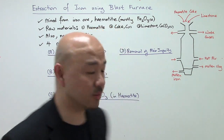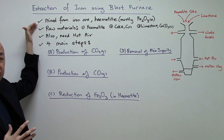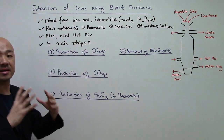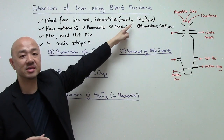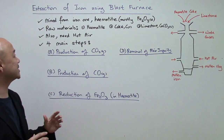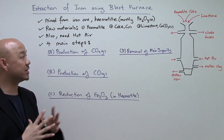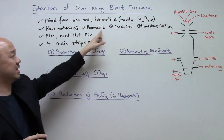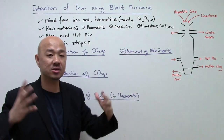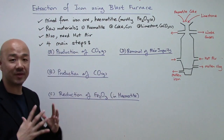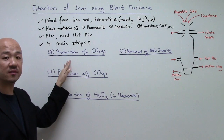Iron is always mined from the iron ore known as hematite, and the main component inside is iron(III) oxide, Fe₂O₃, in solid state. The raw materials used for the blast furnace to extract iron from hematite are: hematite itself, coke (which is essentially carbon), limestone (which is calcium carbonate, CaCO₃), and hot air, which consists of 21% oxygen.